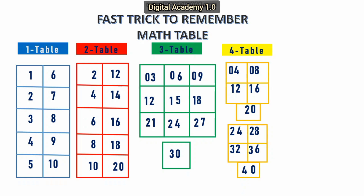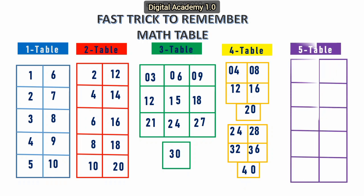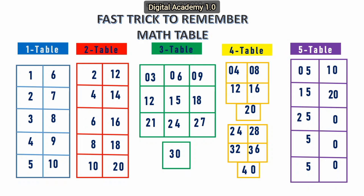Next let us see the 5 table. There are also 2 steps. In the first step, enter 5 and 0 in both columns. In the second step, enter the consecutive numbers from right to left and left to right from 0 to 5, and repeat the next in this order. Hence it becomes the table of 5.